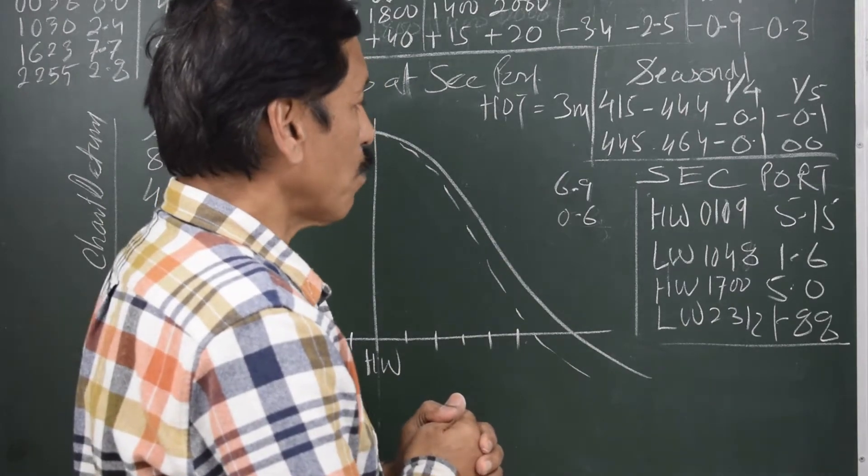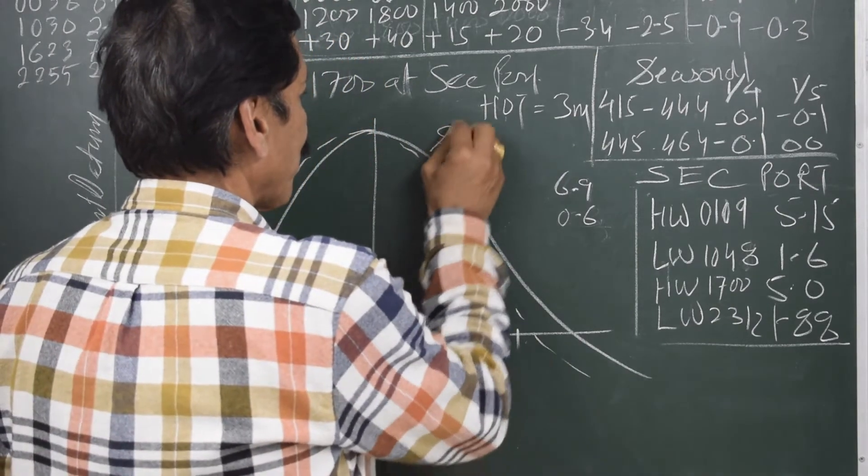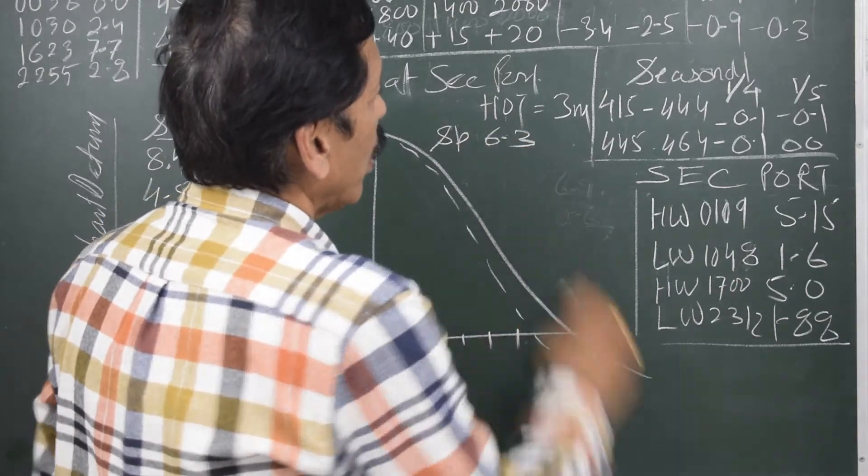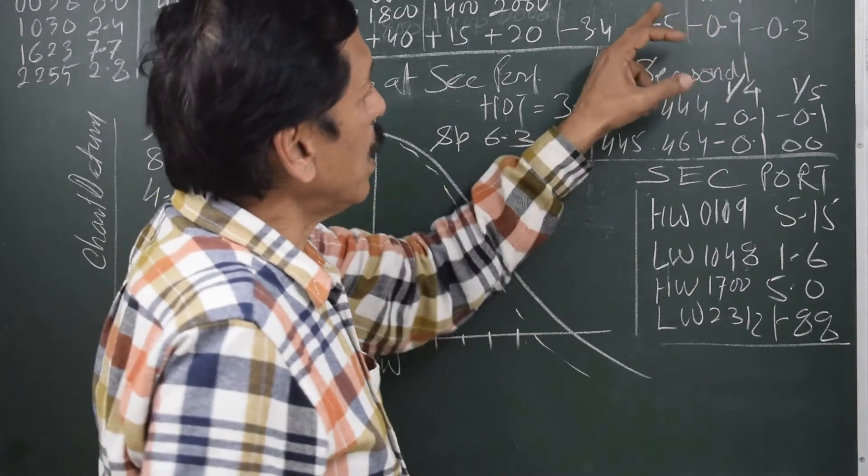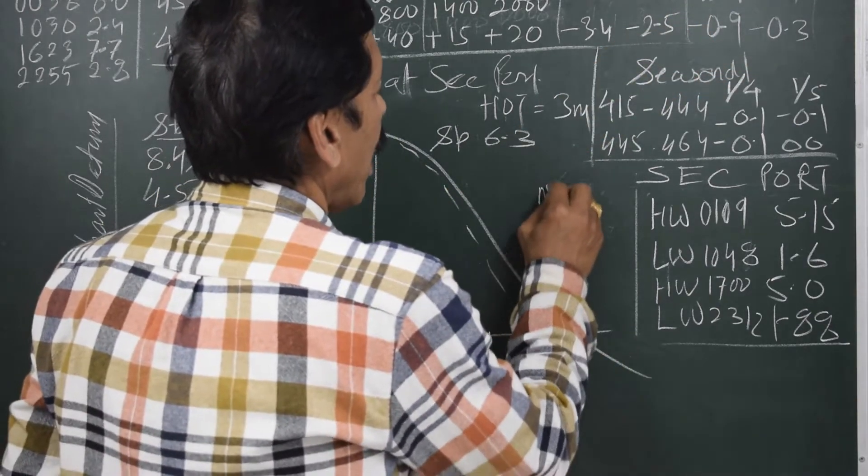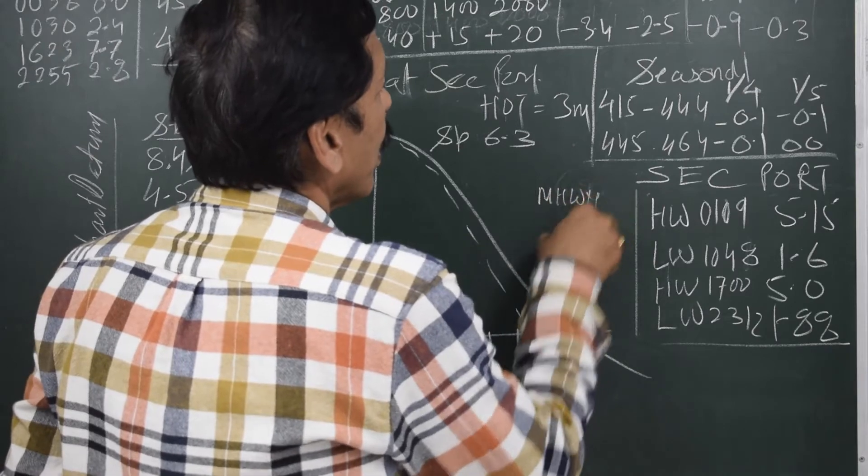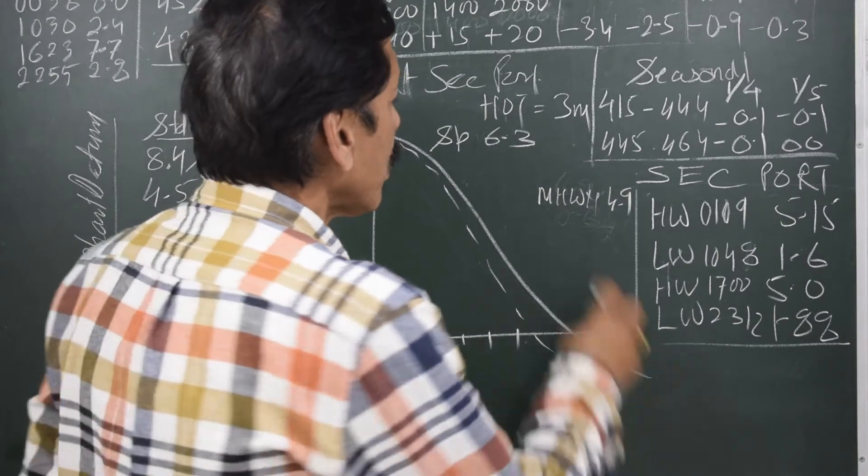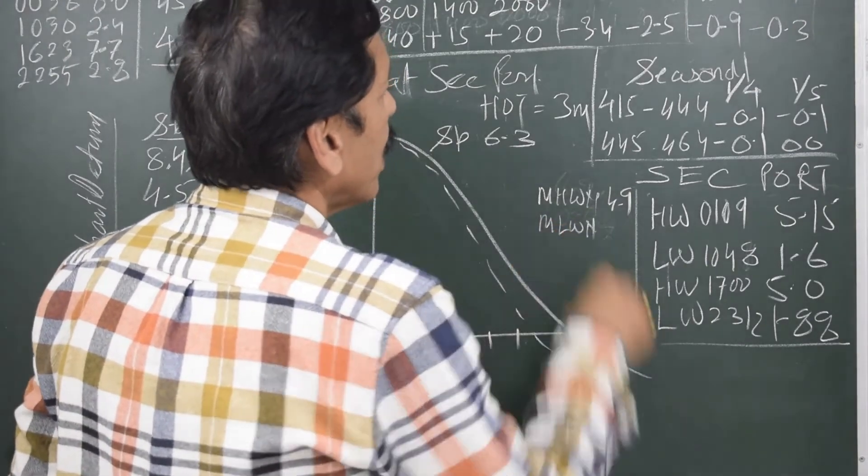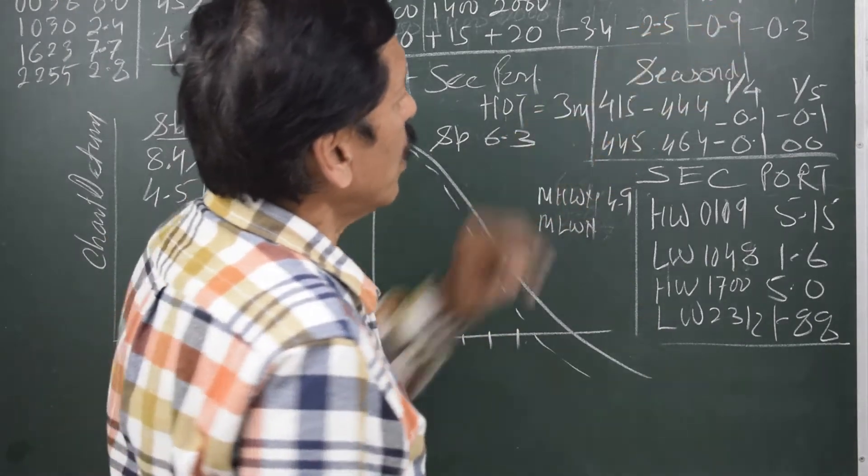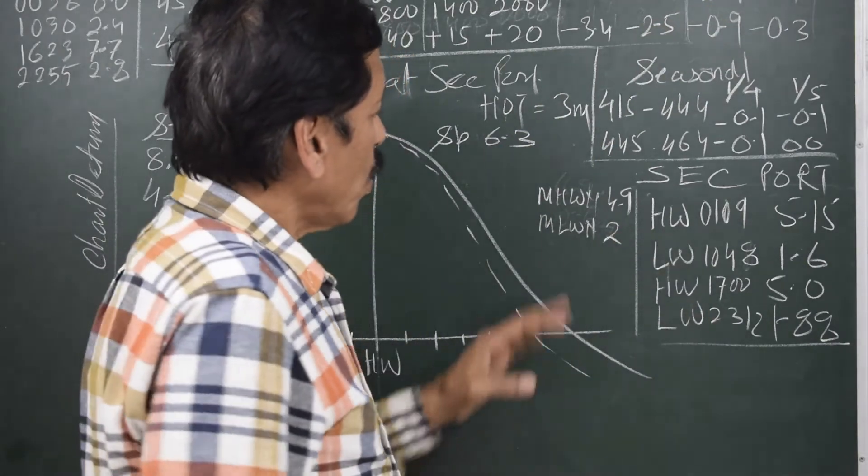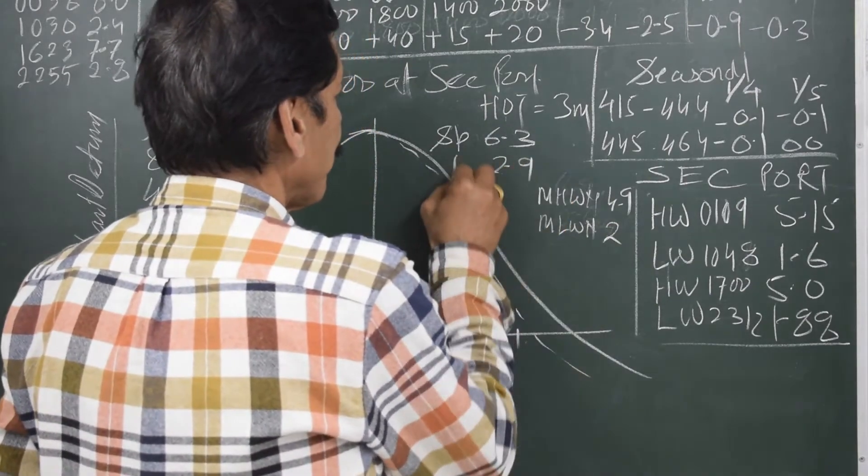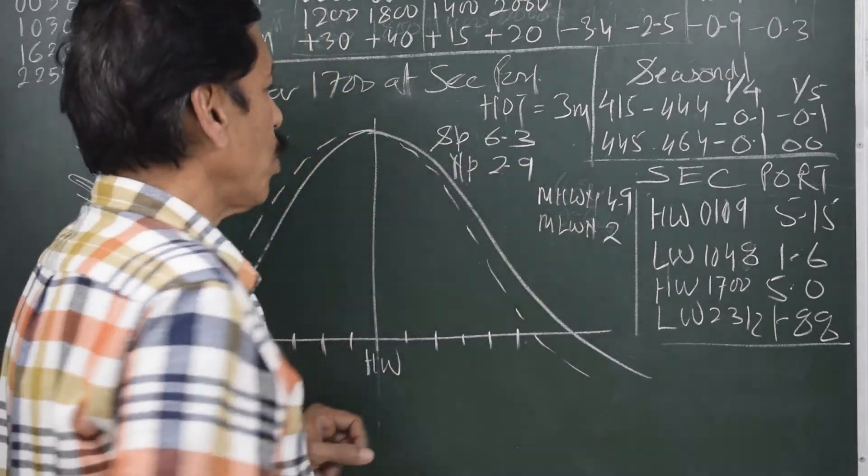Similarly, if we look at the neep ranges at the secondary port, the mean high water neep is 4.9 and mean low water neep is the difference of these two, that is 2. So the range of neep tides at secondary port is 2.9.